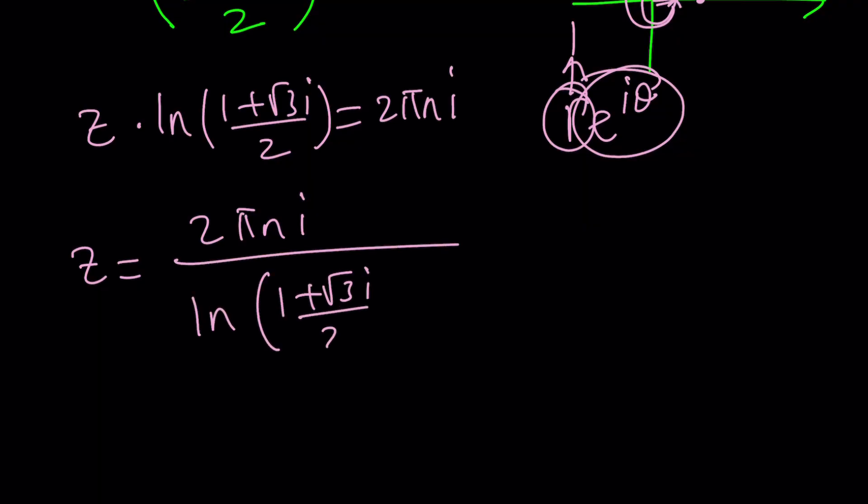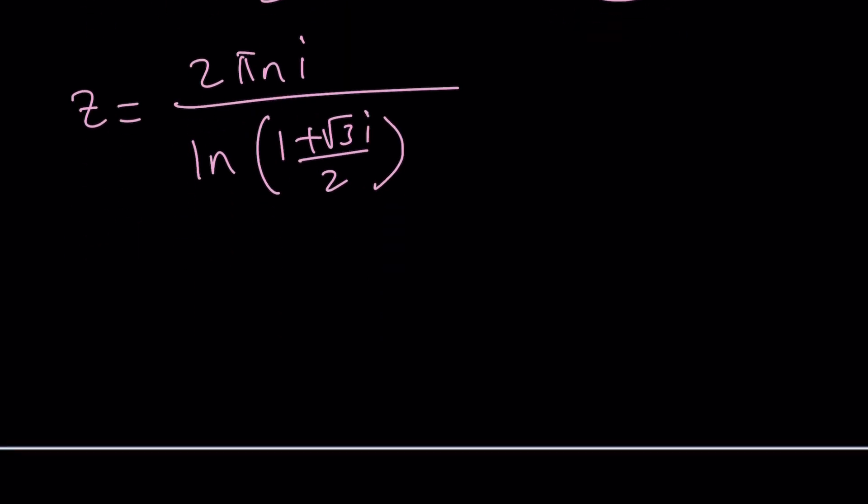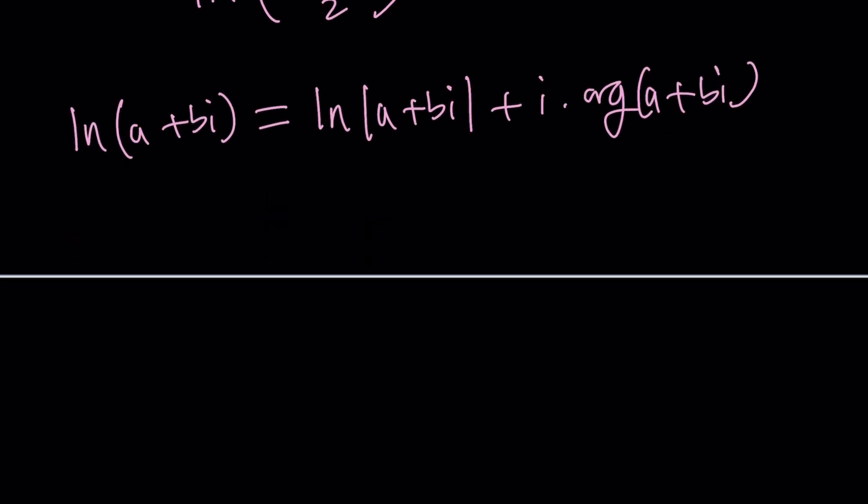It's easy. If you are ln a plus bi it is at least the principal value of the complex logarithm because it's multi-valued is ln absolute value of a plus bi plus i times the argument of a plus bi. Now what is the absolute value of a plus bi? It's the square root of a squared plus b squared which is also you know the modulus.